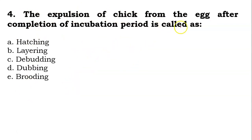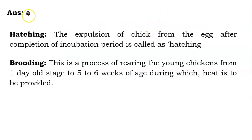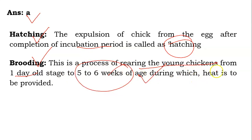The fourth question: the expulsion of a chick from the egg after completion of the incubation period is called — Hatching, Learing, Debudding, Dubbing, or Brooding. Its answer will be A — it is known as Hatching. The expulsion of a chick from the egg after completion of the incubation period is called Hatching. Brooding is the process of rearing young chickens from one day old stage to five to six weeks of age, during which heat is to be provided.